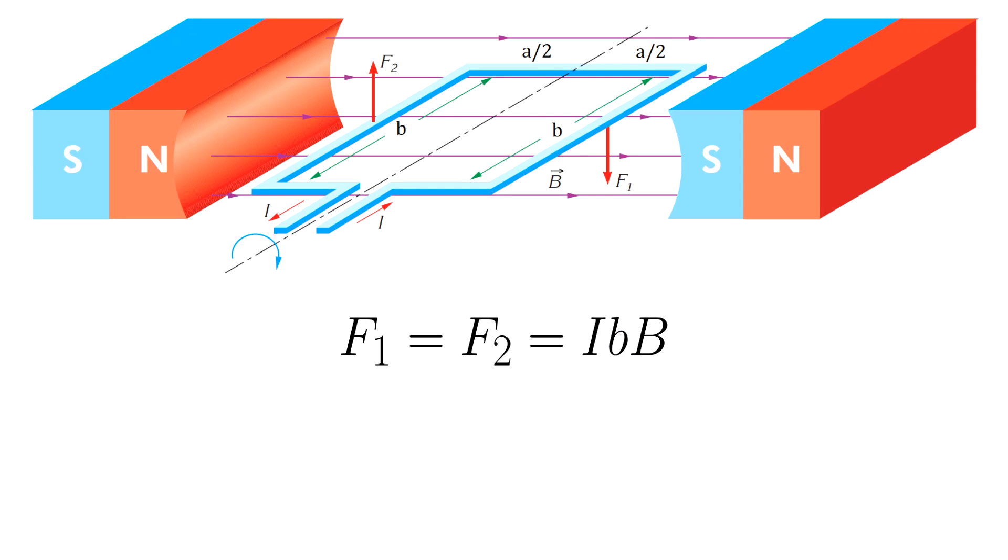The magnitude of these forces can be found as follows: I is the current, b is the length of the wire, capital B is the magnetic field strength. There is a torque on the rectangular loop about the horizontal axis. Torque can be found by multiplying force to the distance between the force and the axis of rotation. There are two forces, which means we have two torques, and these torques have the same direction.